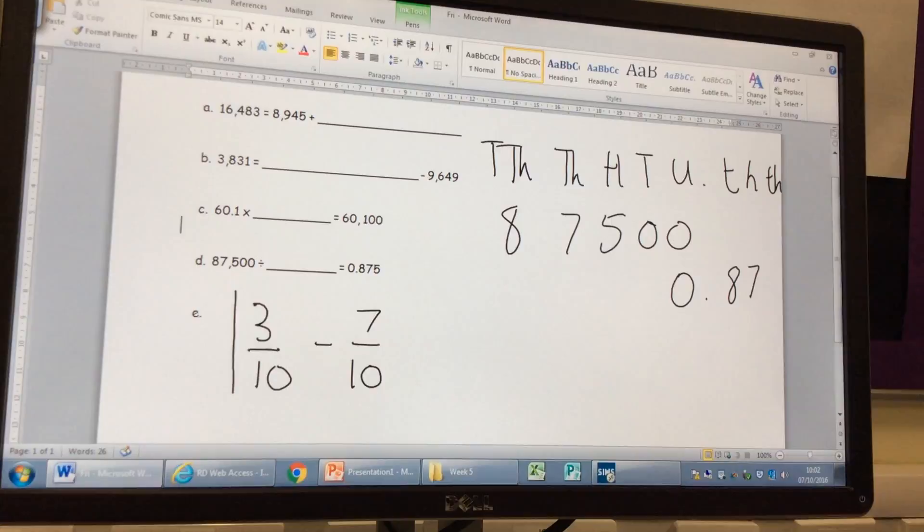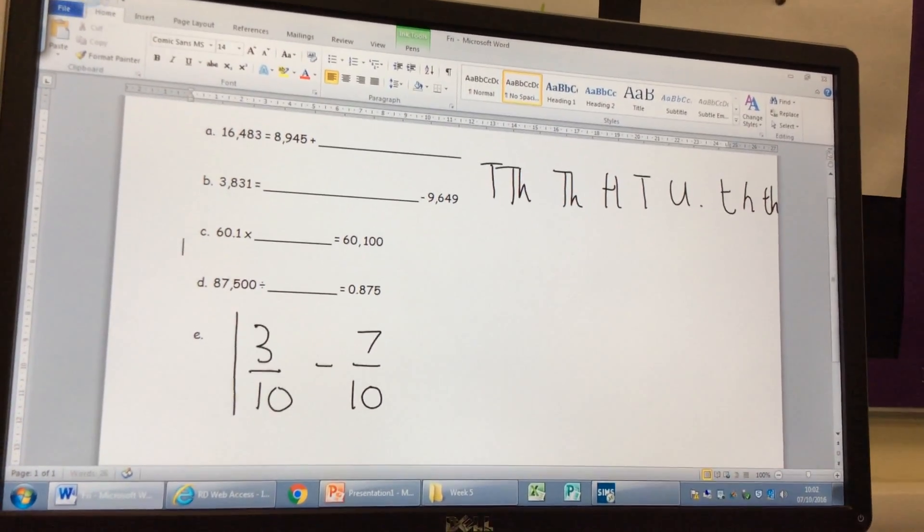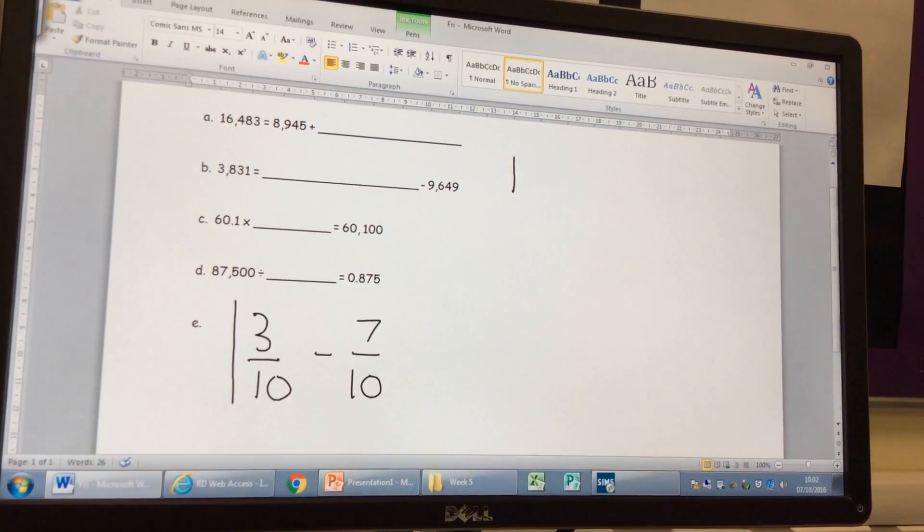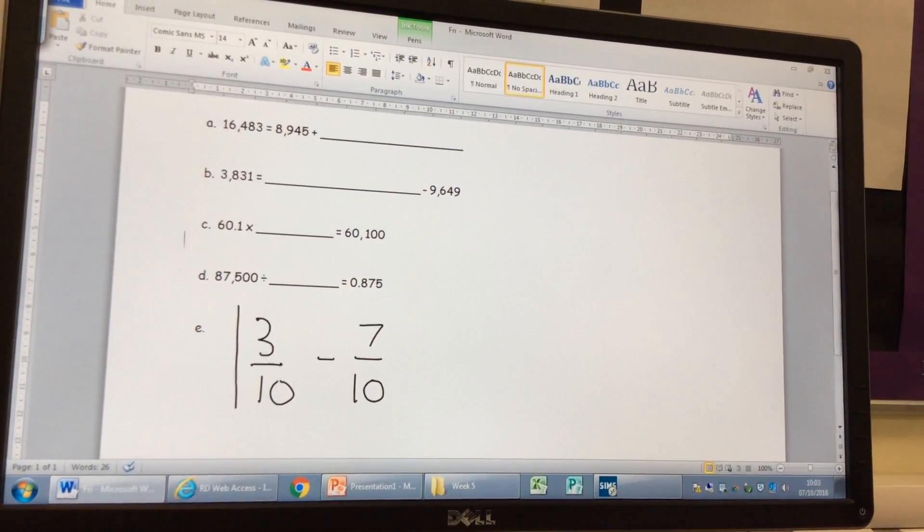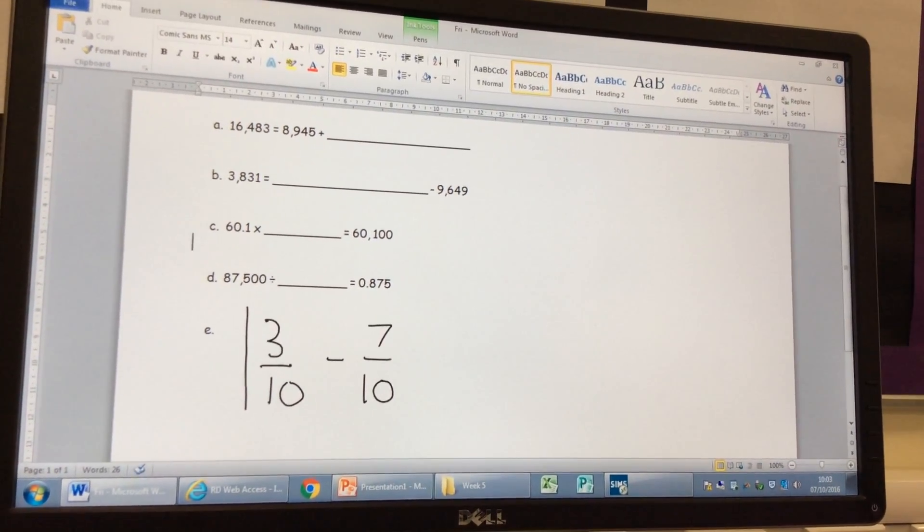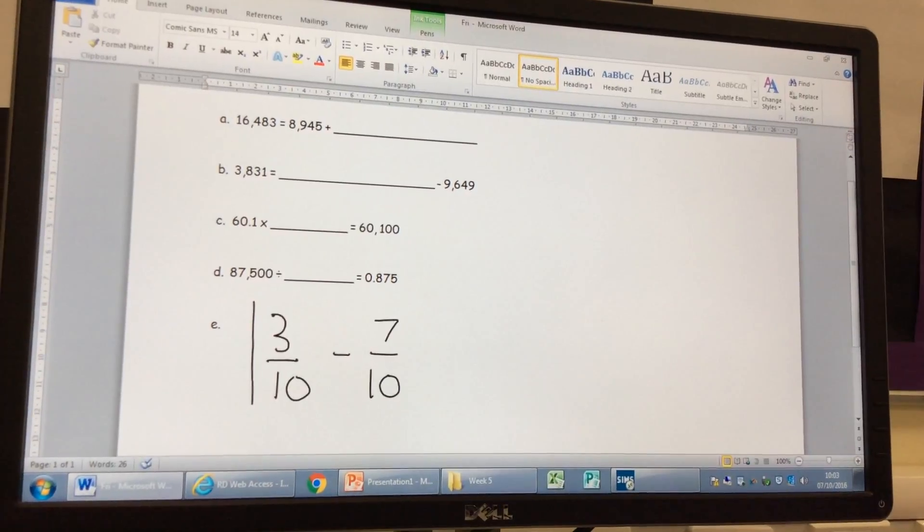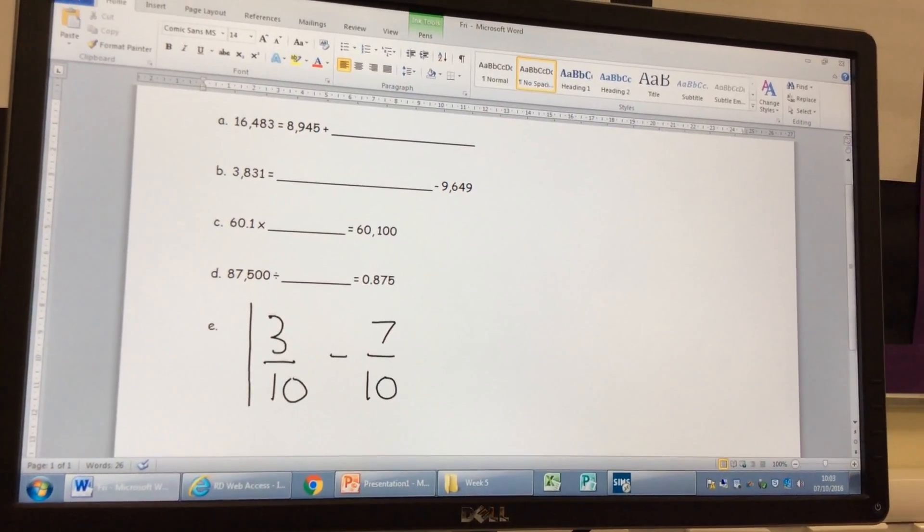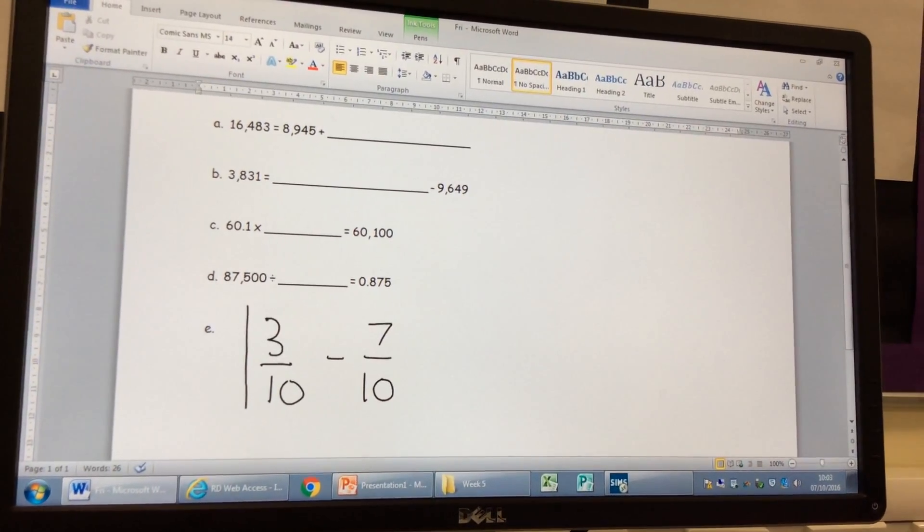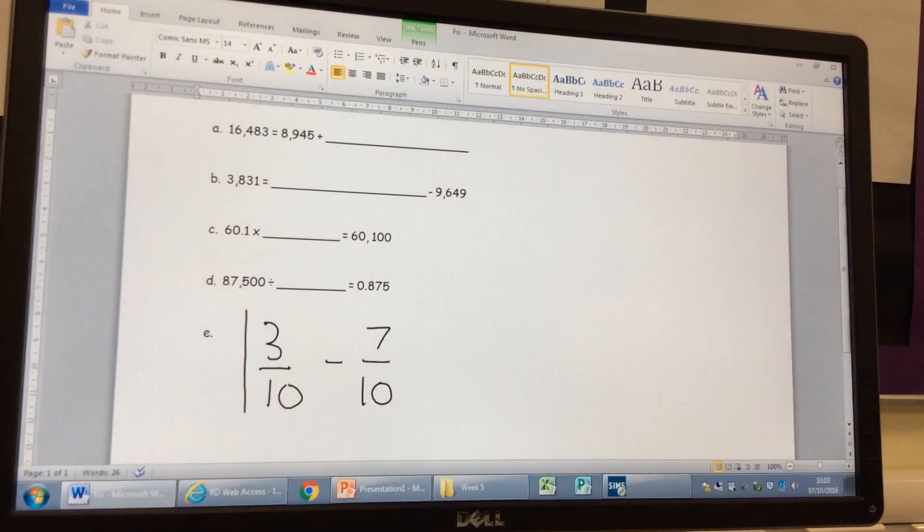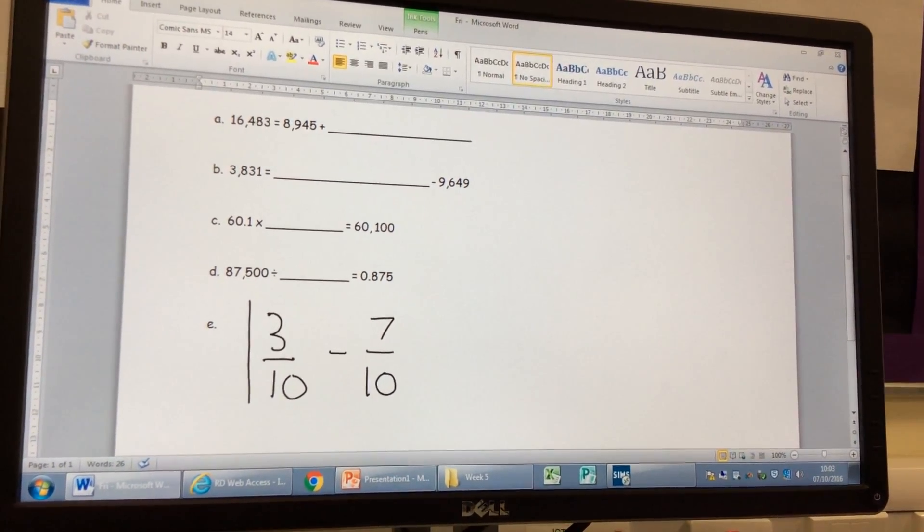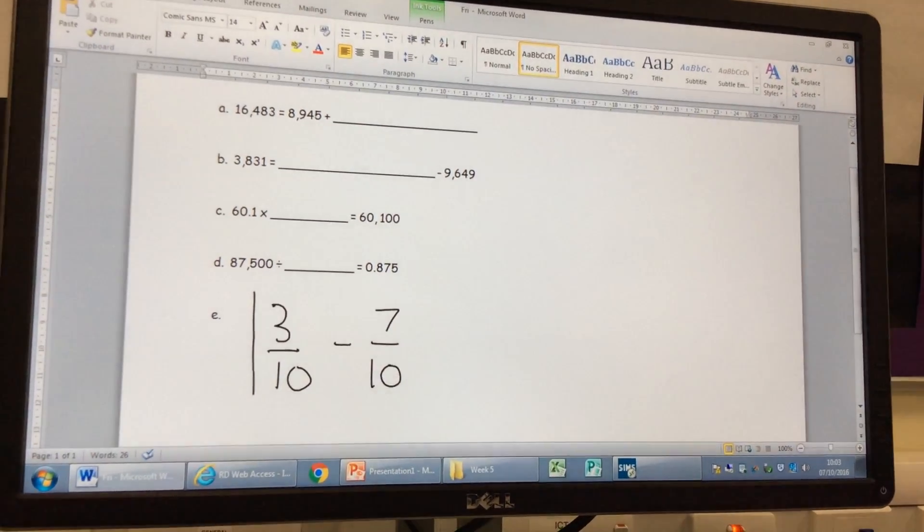Let's do the very last one. Our fractions problem. What's going to make this fraction one a little bit tricky to do? Our take-away fractions problem. Ellie? You can't take away three from seven. We can take away three from seven. Are you sure that's what you meant to say? Well, you can't take away three. Anybody help her out? What can't we do? It's not so easy to do. Seven take away three. We can do seven take away three. What can't we do? Three take away seven. Yeah. We can't do three tenths take away seven tenths.